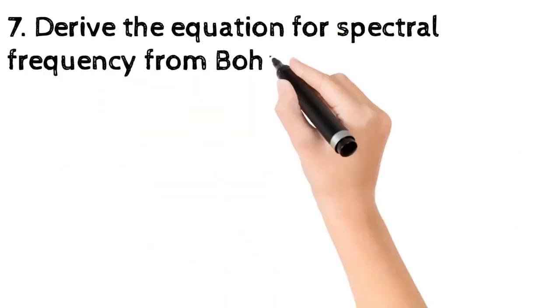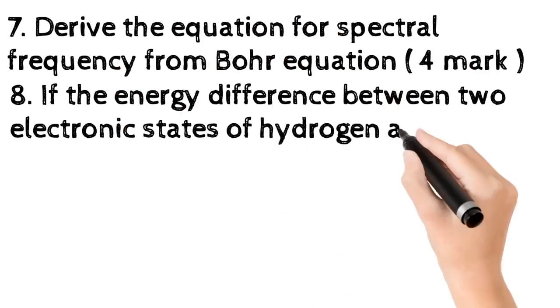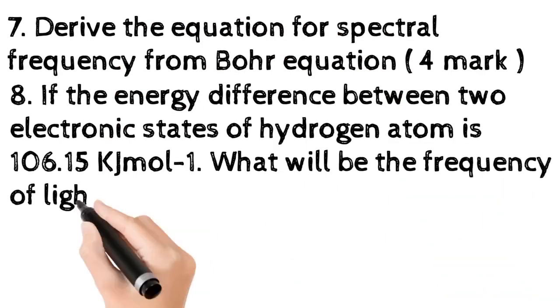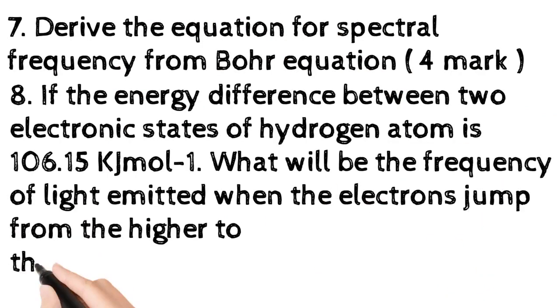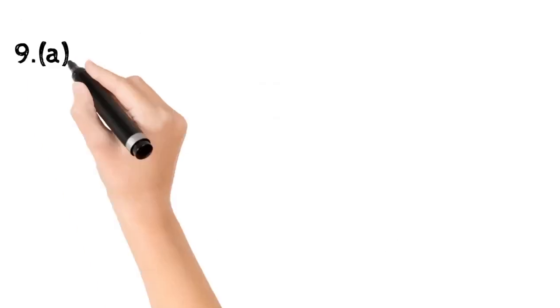Question 7: Derive the equation for spectral frequency from Bohr equation, 4 marks. Question 8: If the energy difference between two electronic states of hydrogen atom is 106.15 kJ per mole, what will be the frequency of light emitted when the electrons jump from the higher to the lower level? 4 marks.